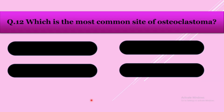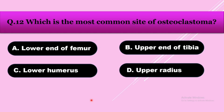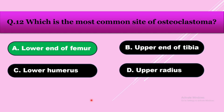Question number twelve: Which is the most common site of osteoclastoma? Option A: lower end of femur, option B: upper end of tibia, option C: lower humerus, option D: upper radius. The answer is lower end of femur.